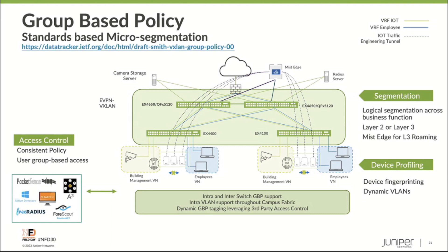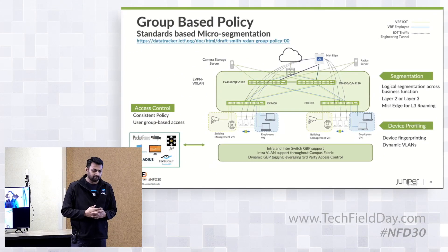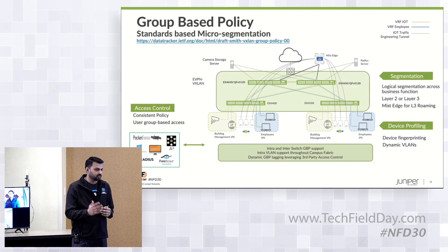With so many devices on the network, how do we control what they can talk to, especially at the layer 2 level? Would we want them to communicate with each other and potentially instantiate a DDoS attack? There was actually an attack of that nature involving cameras. How can we isolate these devices from talking to each other?